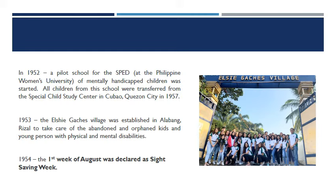In 1954, the first week of August was declared Sight Saving Week. Through Proclamation No. 40 of President Ramon Magsaysay, the first week of August of every year was declared Site Conservation Week, and since then the month of August has been celebrated as Sight Saving Month. The celebration aims to emphasize the importance of protecting and taking care of the eyes, and encourages the public to be aware of available means of restoring lost eyesight and the value of cornea and eye donation.